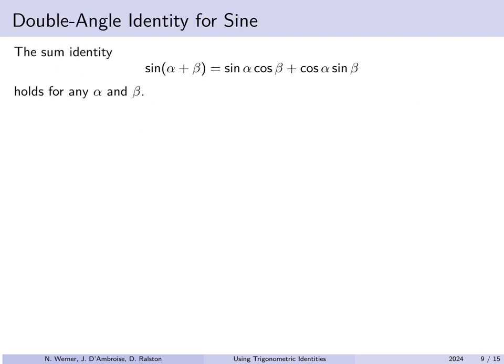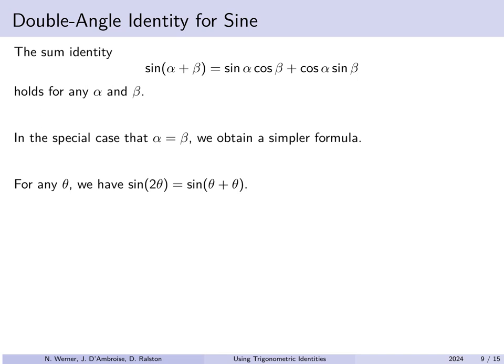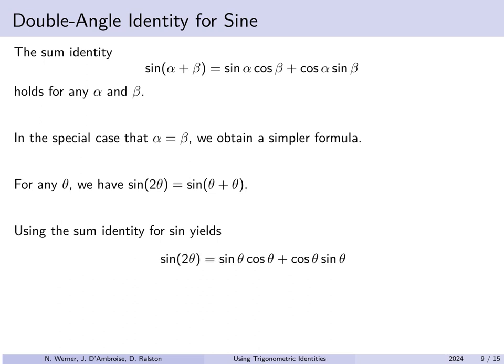Next, consider the sine sum identity: sine of alpha plus beta equals sine alpha cosine beta plus cosine alpha sine beta. What if alpha and beta are the same angle theta? Then we get the sine of two theta equals sine theta cosine theta plus cosine theta sine theta, which is simply 2 sine theta cosine theta. This is called the double angle identity for sine: sine of twice an angle theta equals two times sine theta cosine theta.